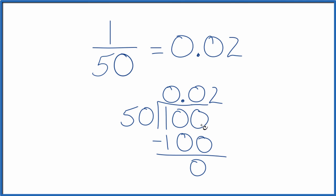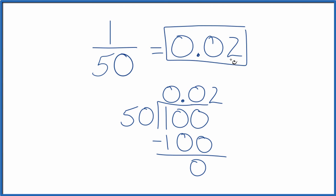This is Dr. B converting the fraction 1/50 to a decimal. The answer is 0.02. If you multiply 0.02 times 50, you get 1 — a good way to check your work. Thanks for watching.